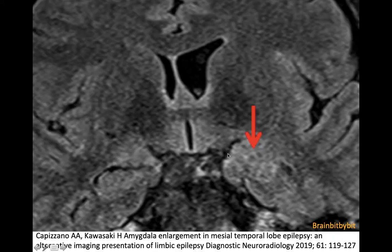This is a coronal FLAIR image in a patient with epilepsy showing an enlarged amygdala. Patients with epilepsy presenting with a first seizure often get imaging early in the workup, and it can be difficult to tell whether the enlargement represents postictal swelling, true amygdala enlargement, or to exclude an underlying tumor.